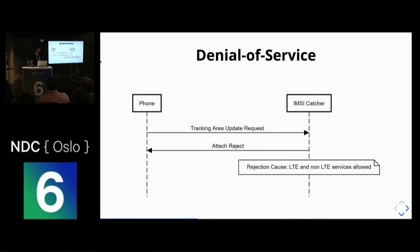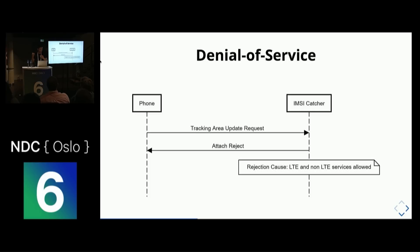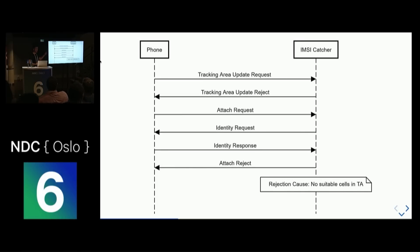The second attack I want to show you is denial of service. It's the exact same message flow as the previous one. The important thing here is what happens when you're disconnecting the phone from your IMSI catcher. In this scenario, I'm attaching a rejection cause called 'LTE and non-LTE services not allowed' in the attach reject. When the phone receives this message, it goes into ghost mode — no 2G, no 3G, and no 4G. It won't search for any other base station until it's rebooted. The vulnerability here is that none of these messages have encryption or integrity protection.